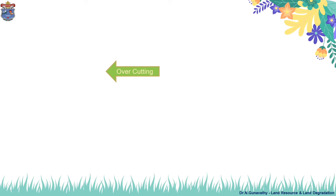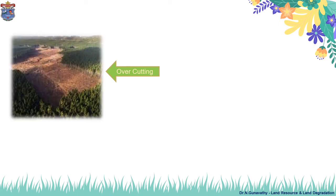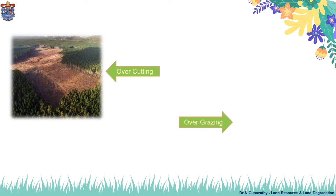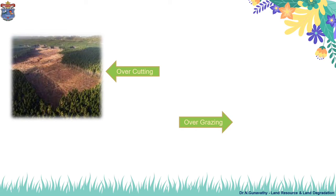Overcutting of vegetation occurs when people cut forests, woodlands, and shrublands to obtain timber, fuel wood, and other products at a pace exceeding the rate of natural regrowth. Overgrazing is the grazing of natural pastures at a stocking intensity beyond the land's carrying capacity. Both also lead to land degradation.